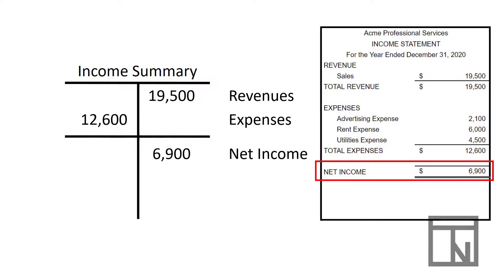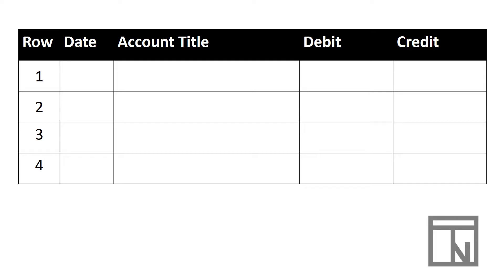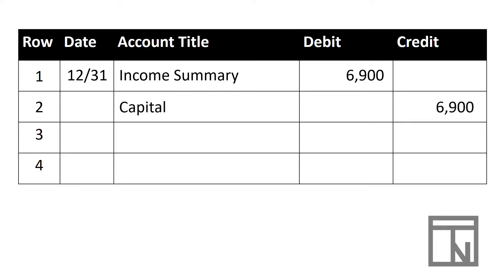Now that we know our net income number, we need to make it zero. If Income Summary has a credit balance of $6,900 and needs to become zero, opposites subtract — so we create a debit of $6,900. The journal entry on 12/31 would be a debit to Income Summary of $6,900, with capital credited for $6,900, since that money is being moved into capital.